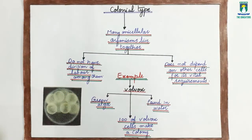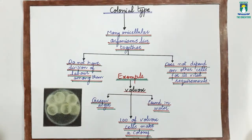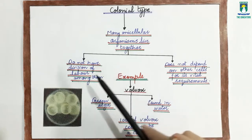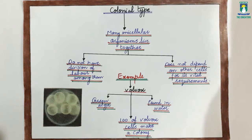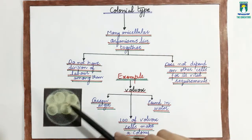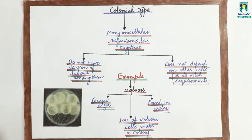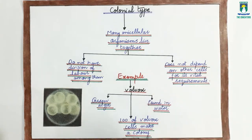Now we will discuss the next type of organisms: colonial type of organisms. In colonial type of organization, many unicellular organisms live together and they don't have division of labor among them. Each unicellular organism in a colony lives its own life and doesn't depend on the other cells for its vital requirements. All the unicellular organisms in colonial organization are present in colonies and perform their own functions.